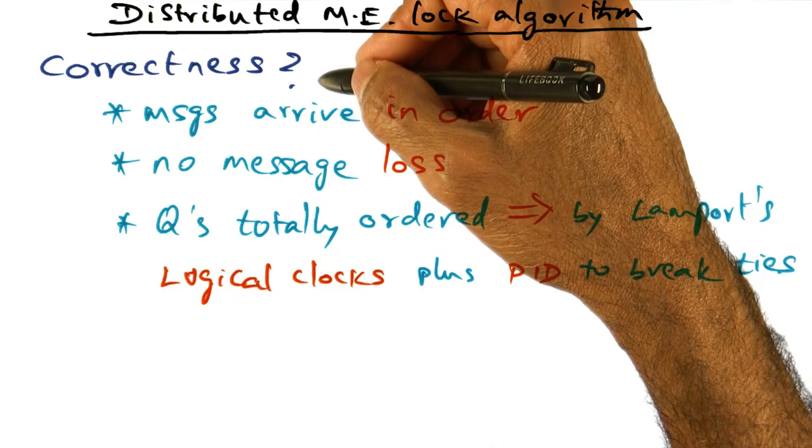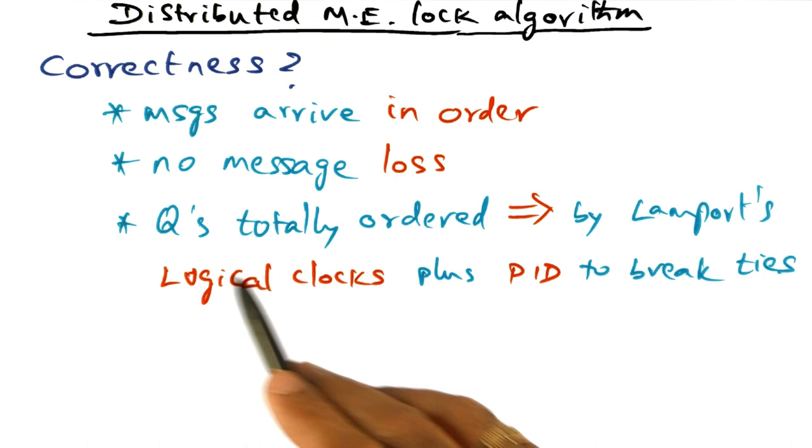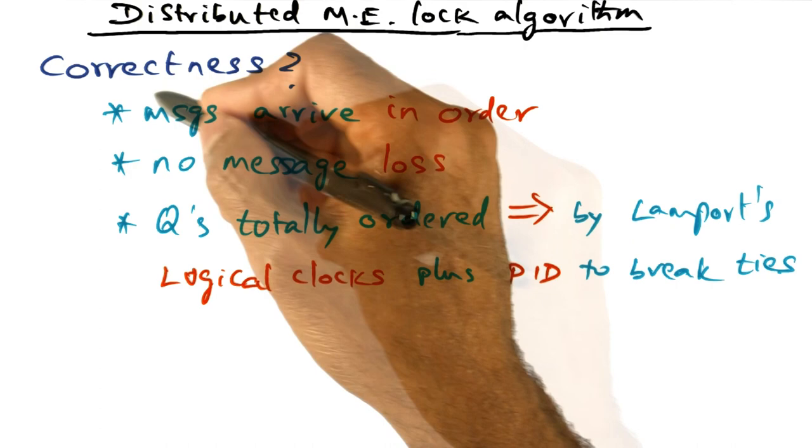So we can informally talk about the correctness of the distributed mutual exclusion lock algorithm. The correctness is based partially on some assumptions and partially on the construction. The construction is that the queue is totally ordered by Lamport's logical clocks and the PID to break ties. But that's part of the construction of the algorithm, but it also is based on some assumptions that we make.